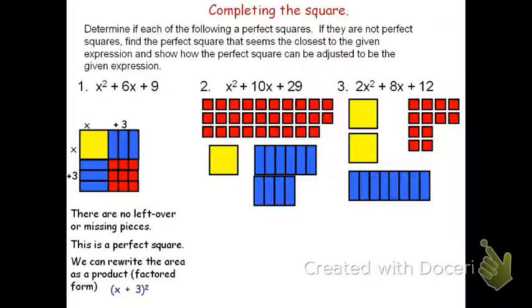I see 10 of the rectangles that have an area of x, the dimensions are 1 by x, and I see that there are 29 of the little squares, which are 1 by 1's, which have an area of 1.